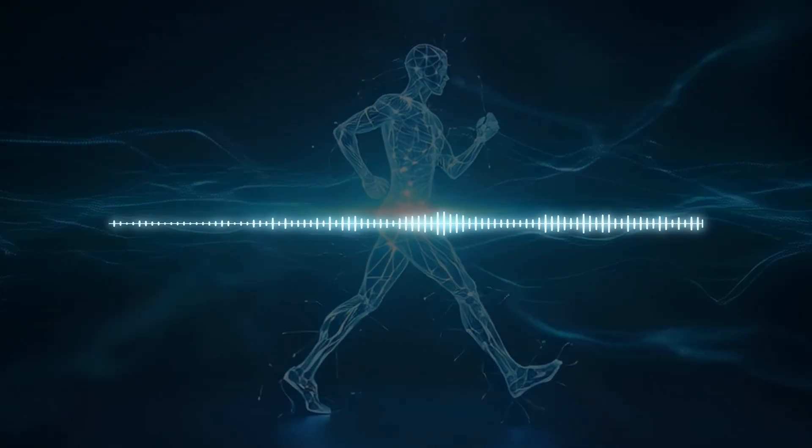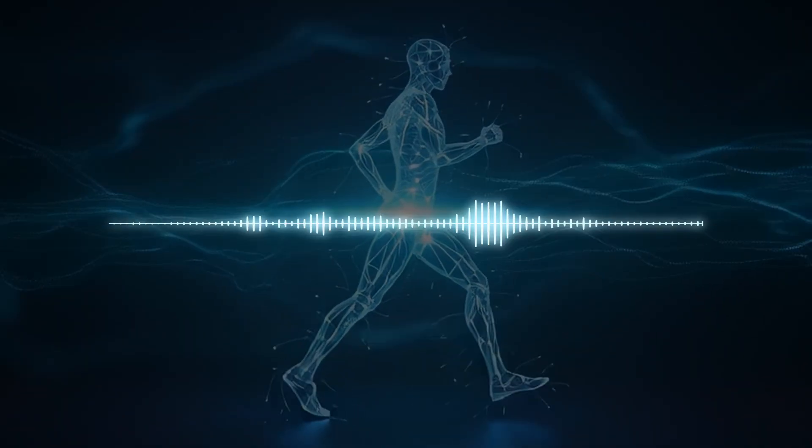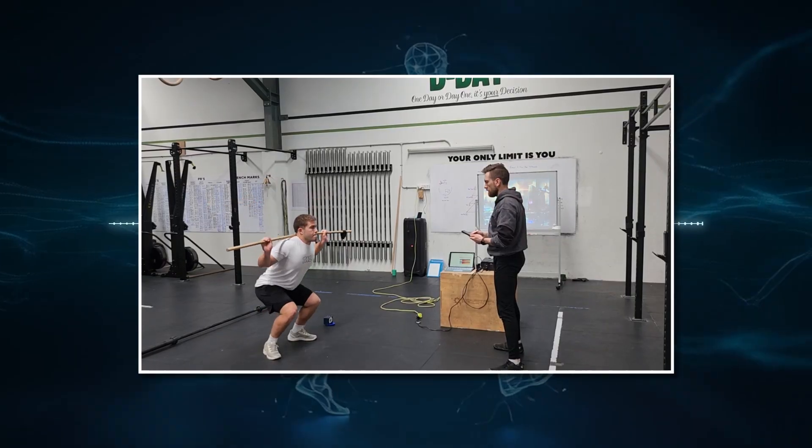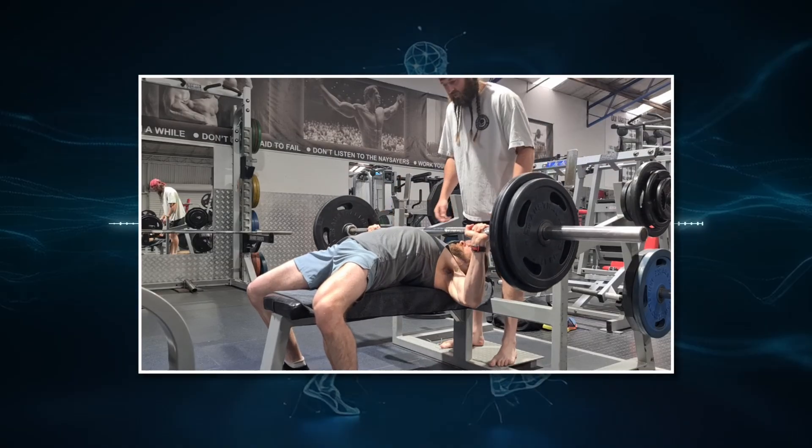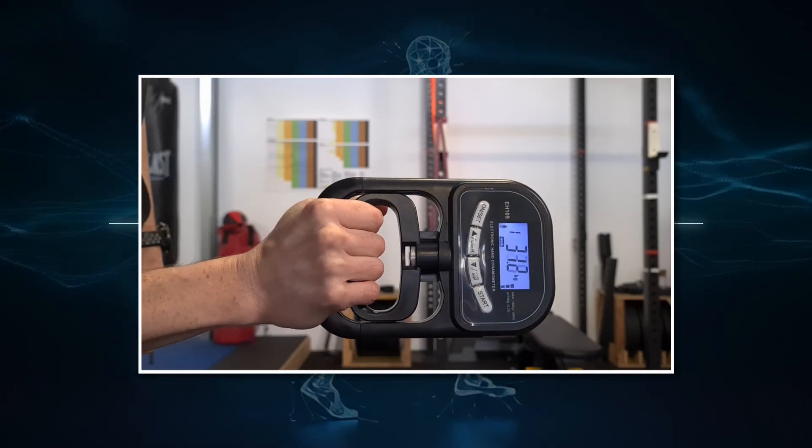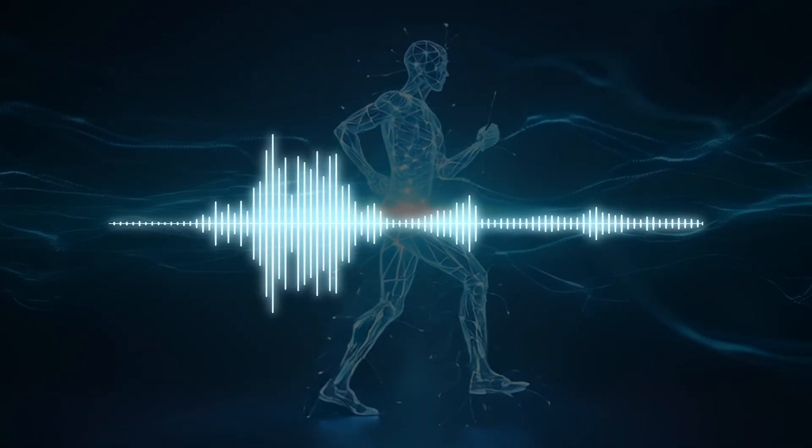Second, athletic performance tests that directly translate to punch power. The counter movement jump for explosive leg power. One repetition max bench press for upper body strength. And grip strength.